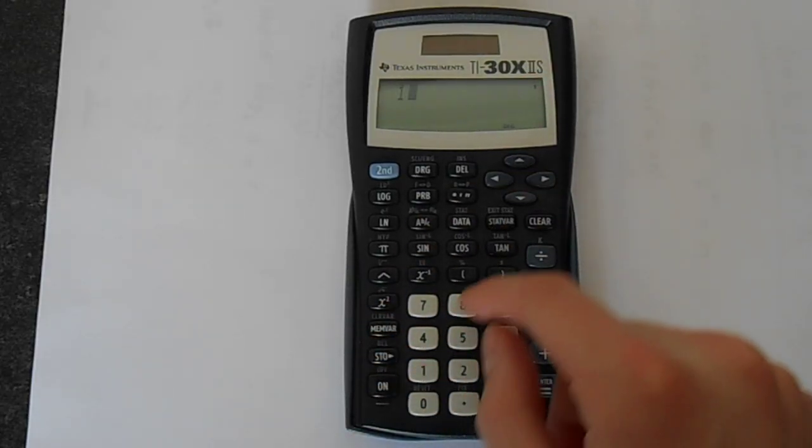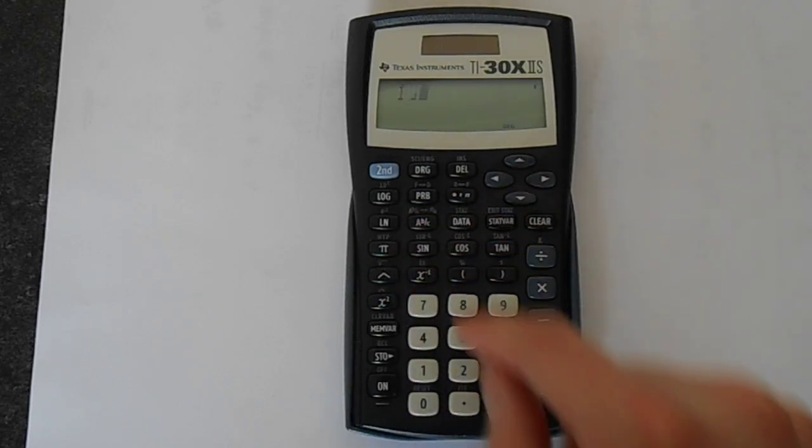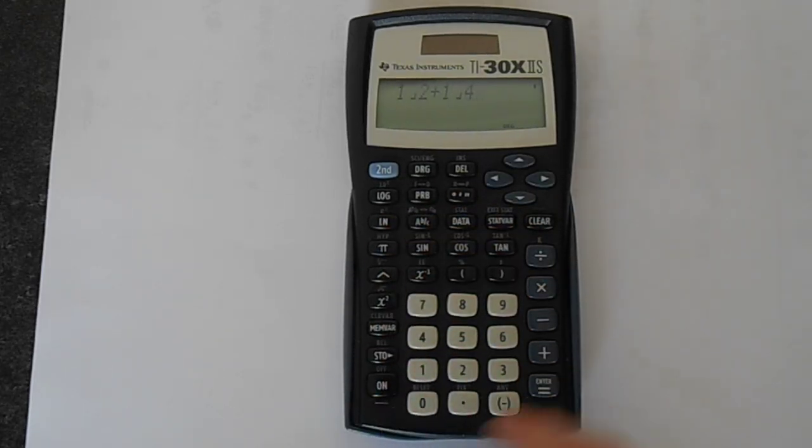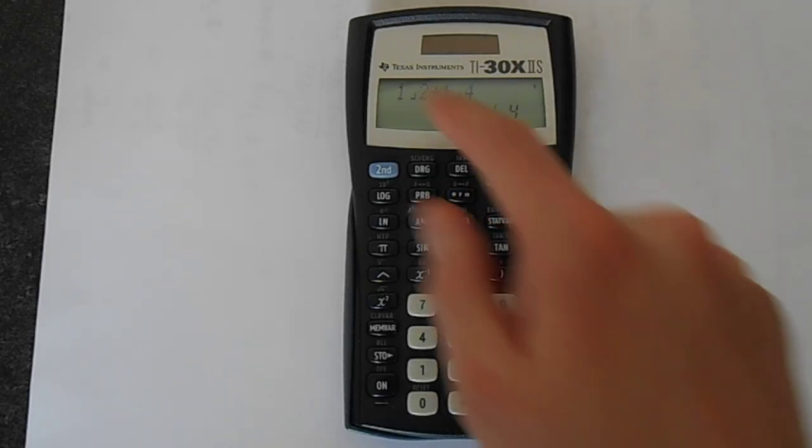So let's say we're doing something like one half plus a quarter. That comes up as three over four on the calculator.